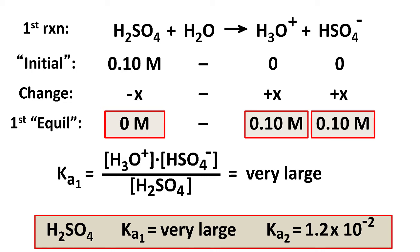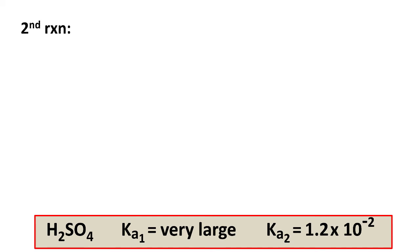Okay, so now we know the results of the first dissociation, and we move on to the second dissociation, which is that the HSO4 made from the first dissociation combines with water to make H3O plus and SO4 2 minus. That one is a double arrow equilibrium.